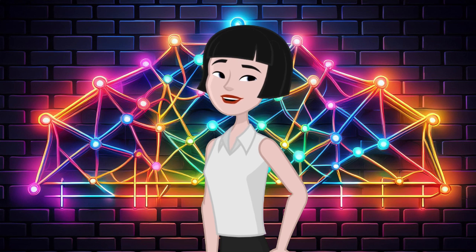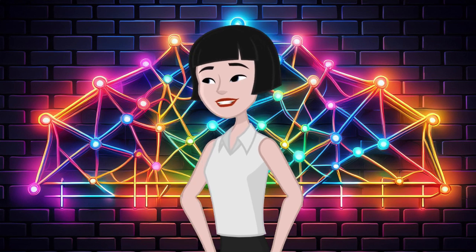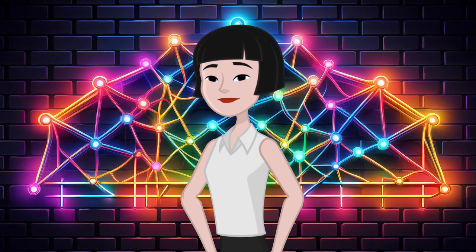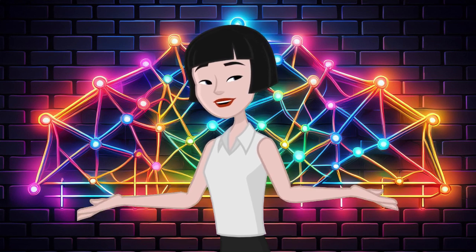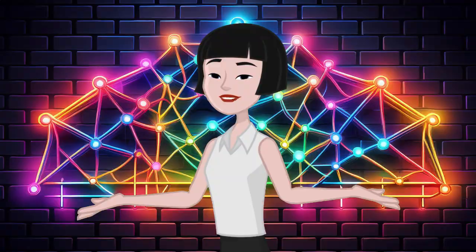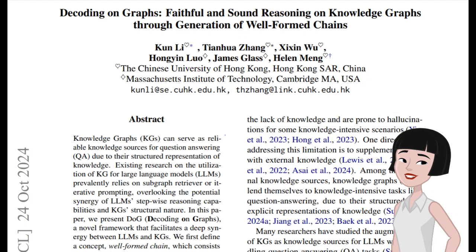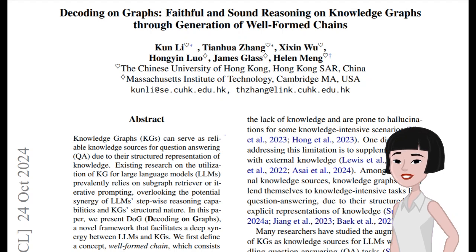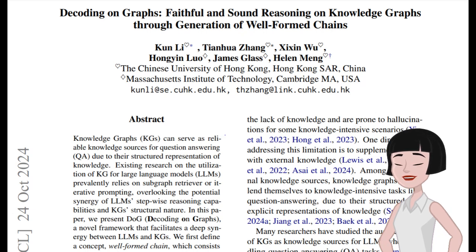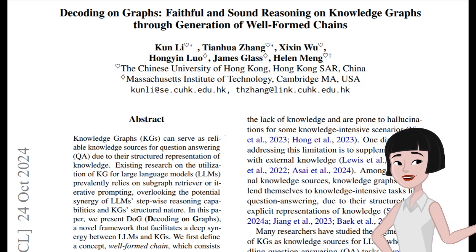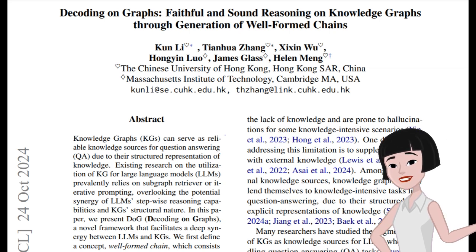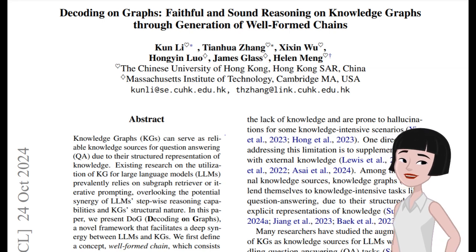But what if there was a way to give AI a strong foundation, something like a reliable source of truth? That's where knowledge graphs come in, and it's what this whole talk on Decoding on Graphs, or DOG for short, is all about. The paper we're exploring here dives into DOG, a new framework designed to integrate knowledge graphs with large language models, LLMs, to create fact-based, reliable responses. It lays out an approach that builds a bridge between AI's language processing abilities and knowledge graph structure databases, aiming to ground the AI's reasoning in actual information rather than inferences.